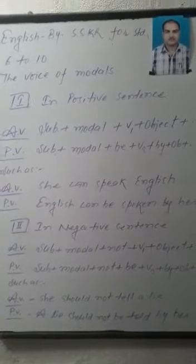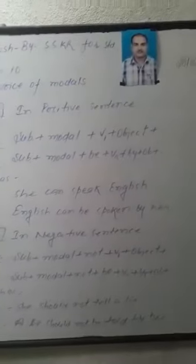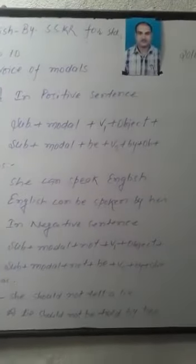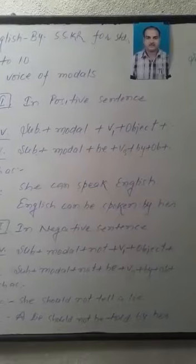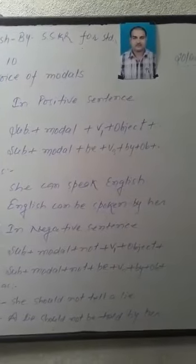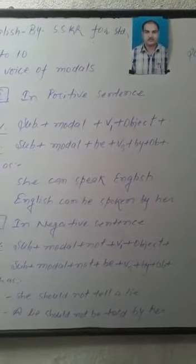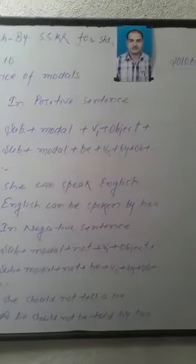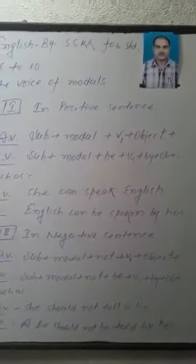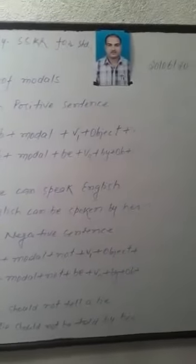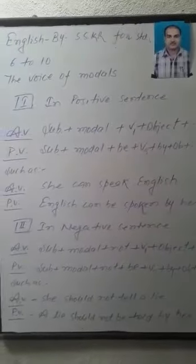Instruction No. 1: In a Positive Sentence, Active Voice structure is Subject plus Modal plus Verb plus Object. Passive Voice structure is Subject plus Modal plus Be plus Third Form plus By plus Object. For example, Active Voice: 'She can speak English.' Passive Voice: 'English can be spoken by her.'